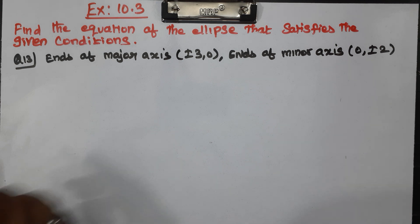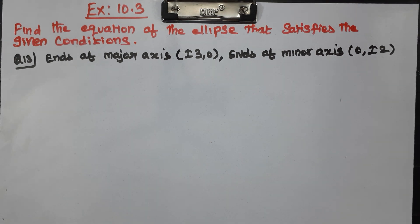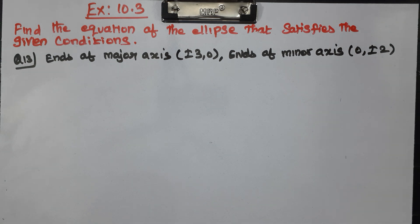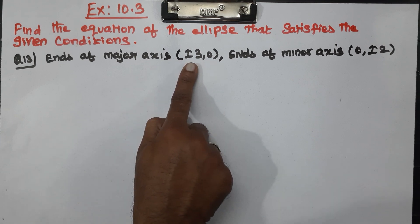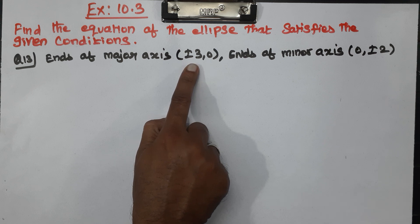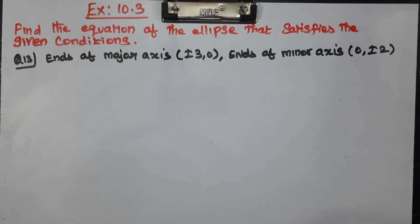We are going to find the Equation of the Ellipse. We will use the ends of the major and the minor axis. The major axis is along the x-axis. The standard equation of the ellipse is: x squared by a squared plus y squared by b squared equals 1.